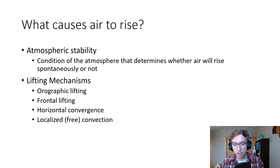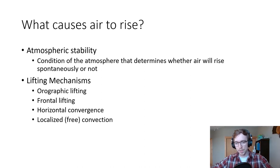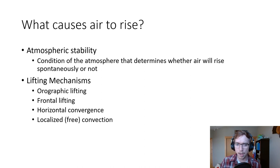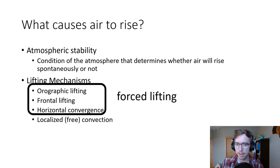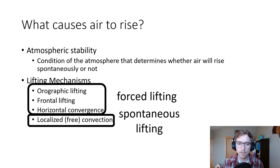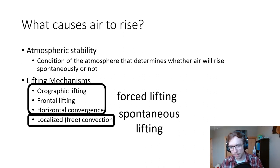Horizontal convergence is where you have converging winds at the surface in a low pressure system and diverging winds aloft, so converging air rises, cools, and diverges at altitude. Localized free convection is where bodies of water and things like that are heated — that convection causes air to rise, condense, and you have cloud formation. The first three — orographic, frontal, and horizontal convergence — are forced lifting mechanisms, whereas localized or free convection is spontaneous lifting driven by local ponds, lakes, or other surfaces interacting with incoming solar radiation.